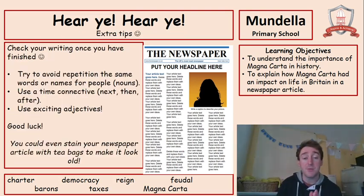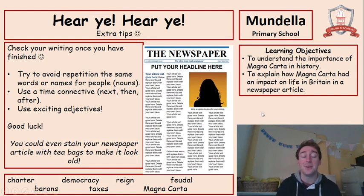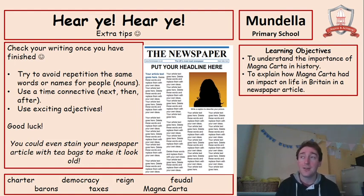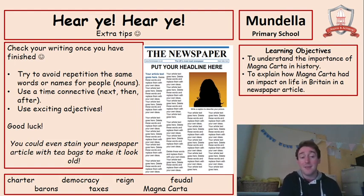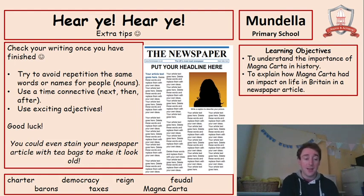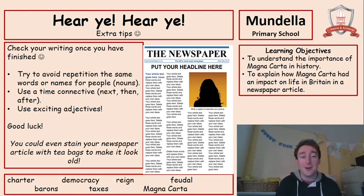Extra tips: check all of your writing when you're finished. Remember that newspaper article just shows you how to lay it out to put it into your book. Try to avoid repetition with the same words or names of people — try calling them different things like 'the king' or 'John' or 'the mean ruler.' Use a time connective: next, then, after that. Use exciting adjectives. You could even stain your newspaper article with tea bags to make it look old. After you finish writing it on separate paper, put tea bags onto it and then it will look old once it's dry.